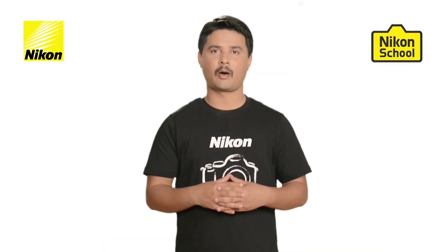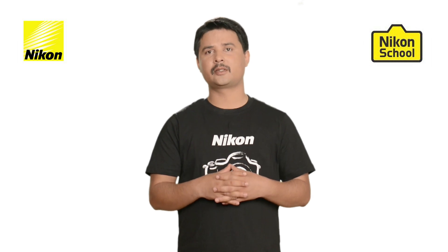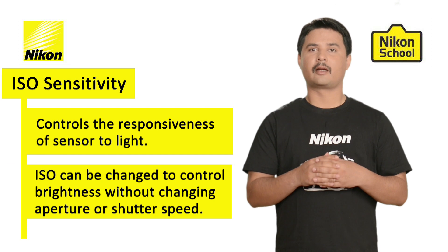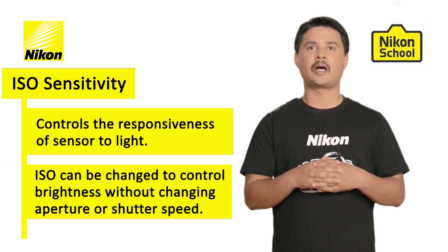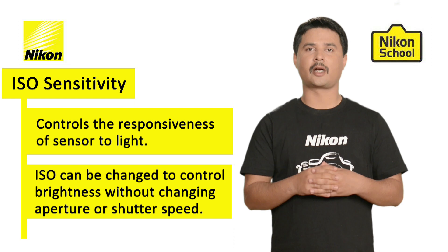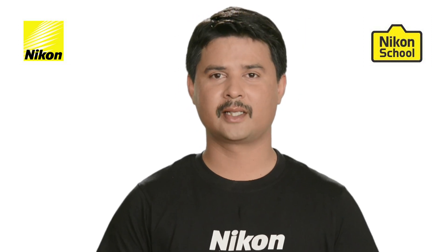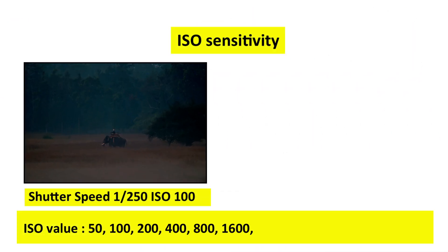Now let us discuss the third component of exposure, which is called ISO. ISO is basically the responsiveness of the sensor towards light. The ISO setting can be changed to achieve a much brighter output without even changing the shutter speed and aperture. Let us see how ISO works. Here you can see an image which is very dark. If you want to achieve a bright output without changing the shutter speed and aperture or using a flash,